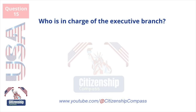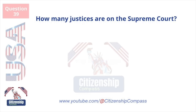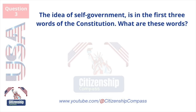Who is in charge of the executive branch? How many justices are on the Supreme Court? Nine. The idea of self-government is in the first three words of the Constitution. What are these words? We the people.